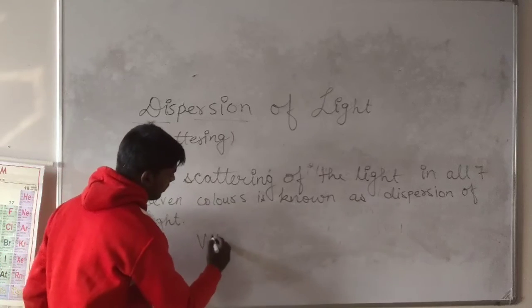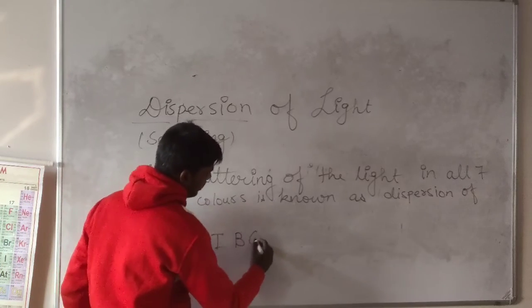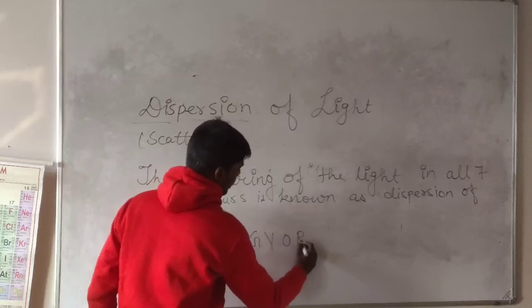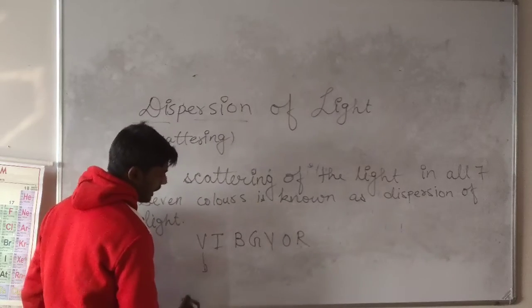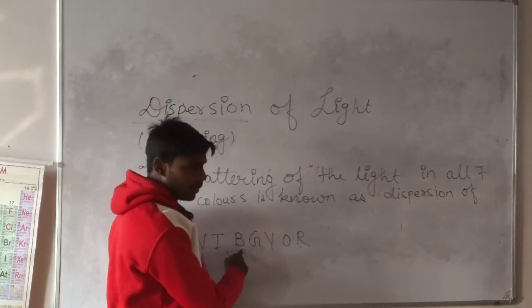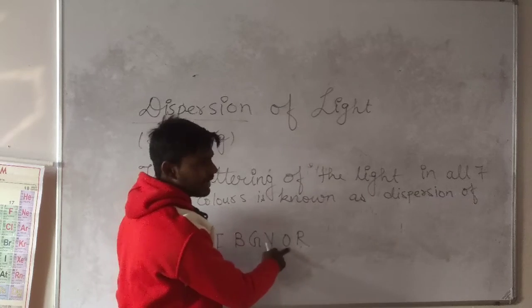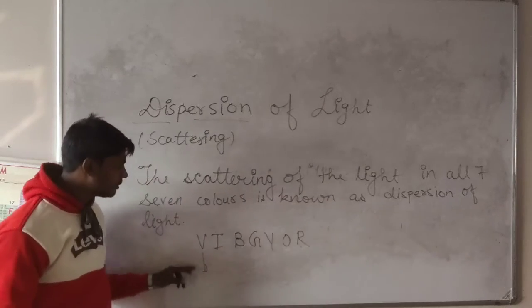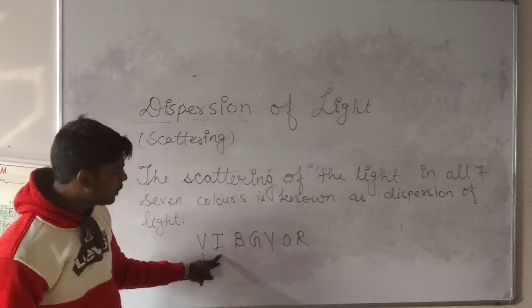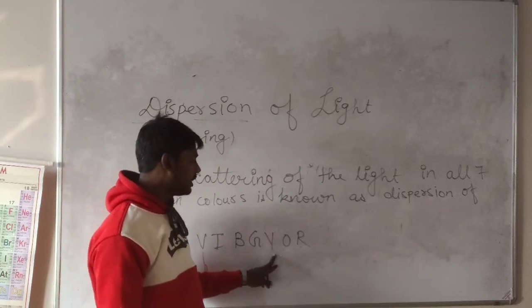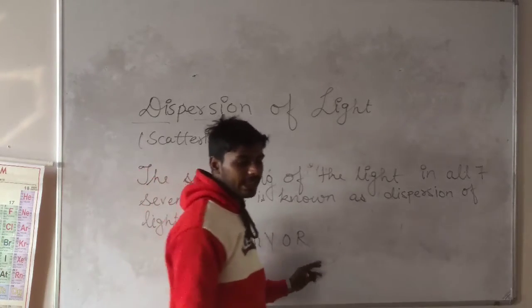And their order is VIBGYOR: V for violet, I indigo, B blue, G green, Y yellow, O orange, and R red.